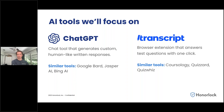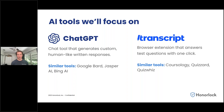That is an important distinction between how Honorlock approaches things and perhaps other proctoring companies: we want to stop the cheating before it gets started, so you don't have to deal with it as an institution. If we can get there before the student uses that phone and deescalate, that's a huge benefit — the student may not receive a failing score, you as an instructor don't have to deal with academic proceedings, and we've saved you time.